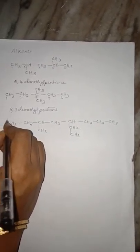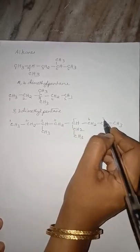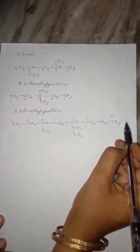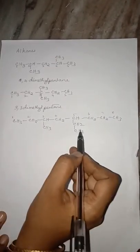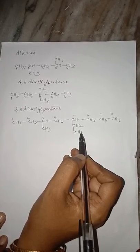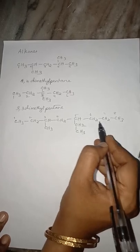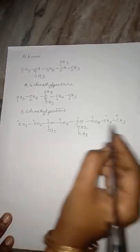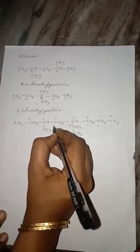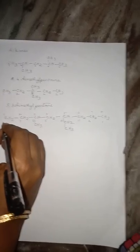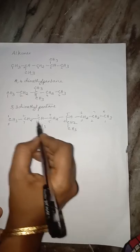When you number from this side: 1, 2, 3, 4, 5, 6, 7, 8. I have chosen this longest chain and the minimum numbers we are getting to the substituents are 3 and 5. Suppose if I number from the other side: 1, 2, 3, 4, 5, 6, 7, 8 — I will be getting the numbers 4 and 6.